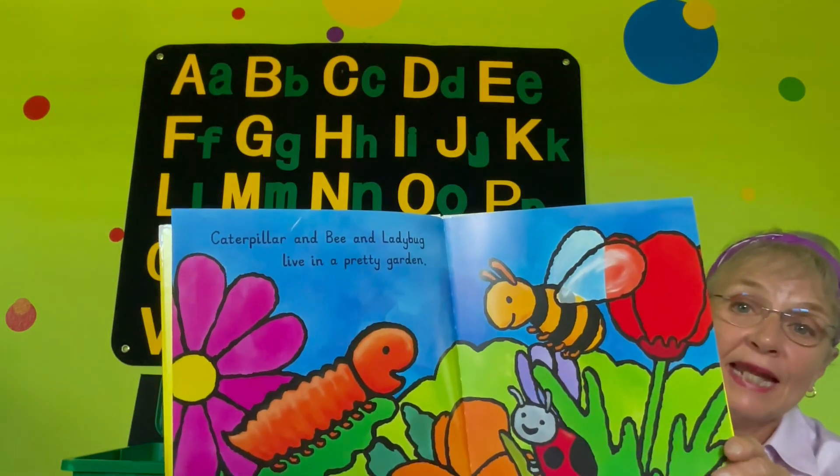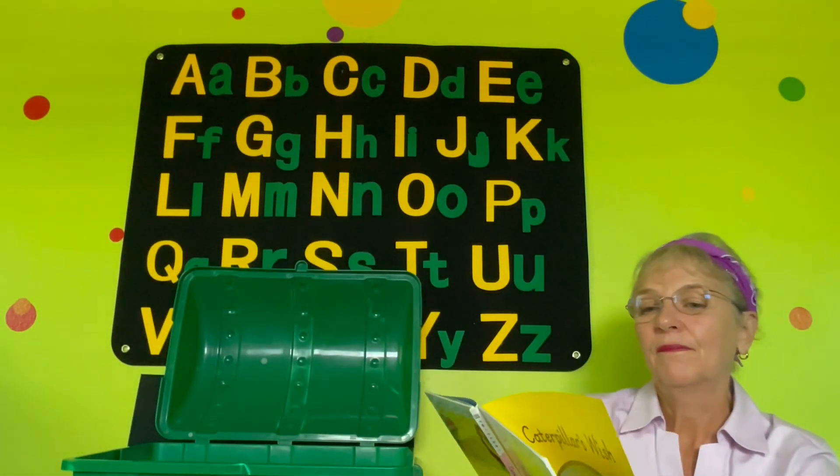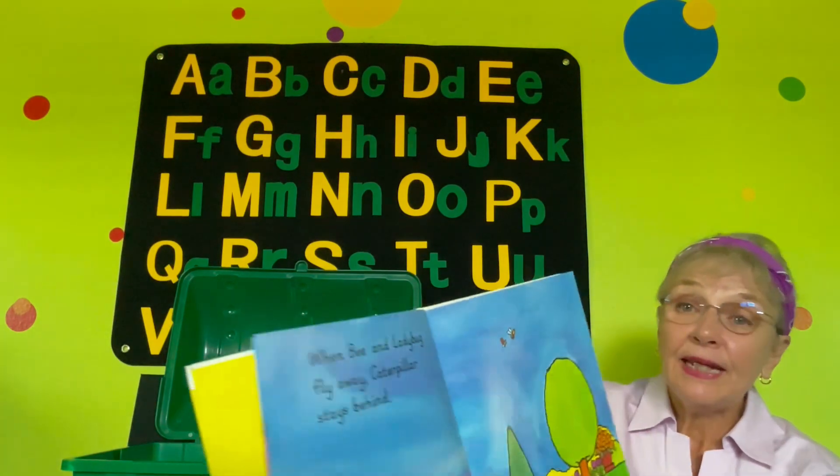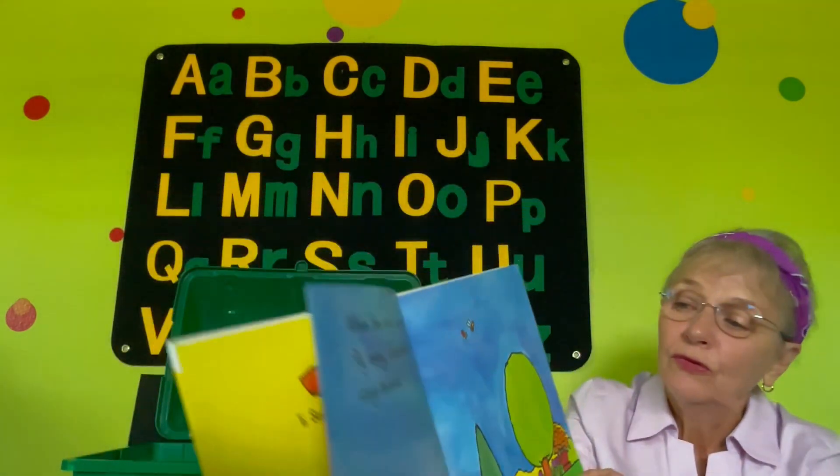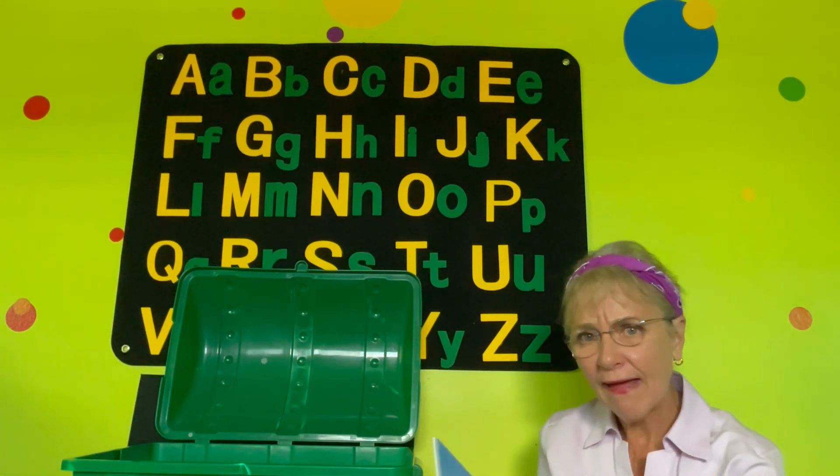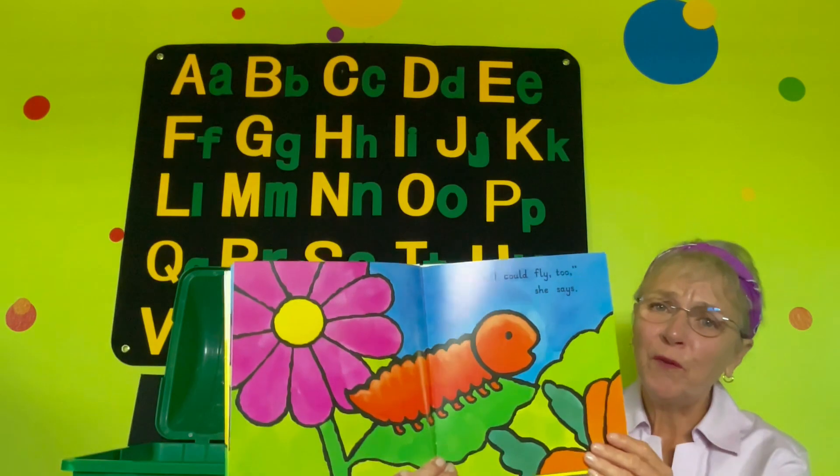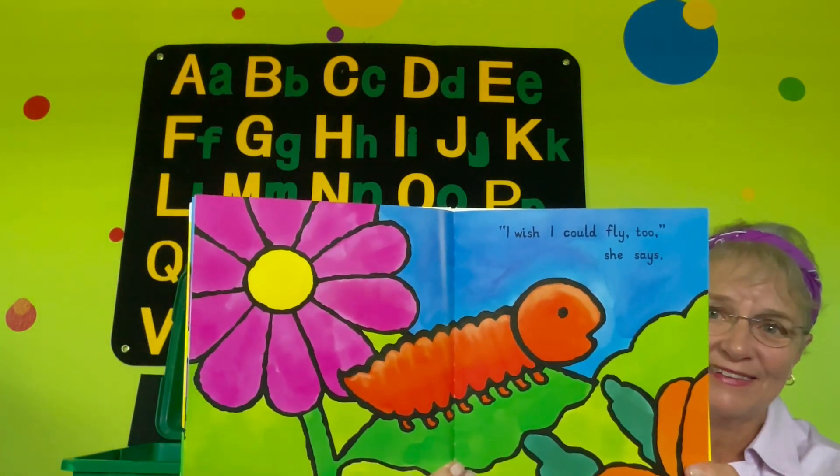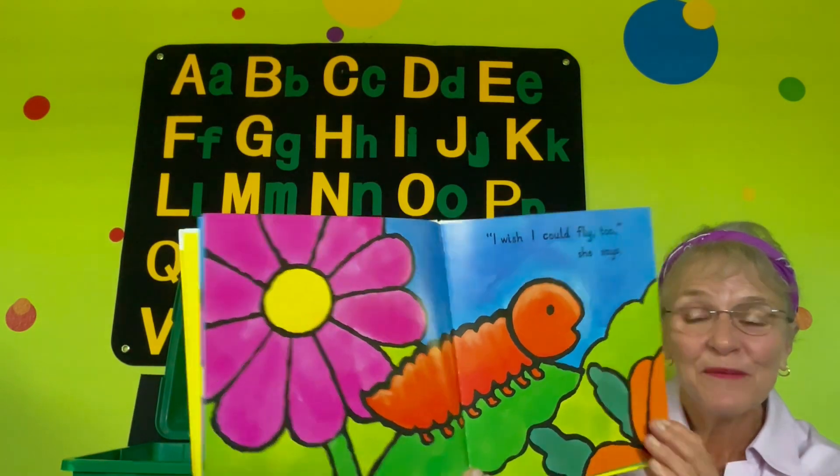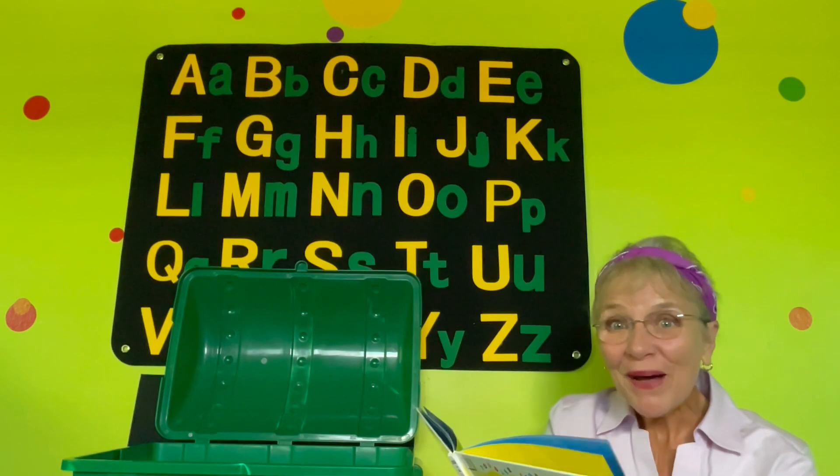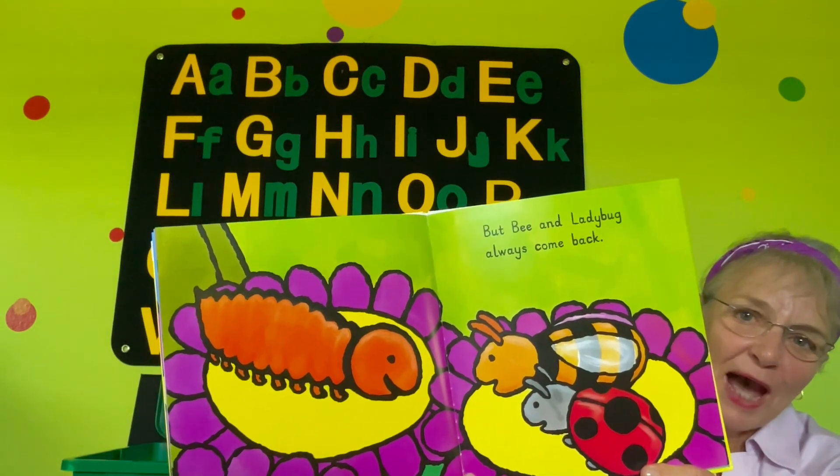Caterpillar and bee and ladybug live in a pretty garden. When bee and ladybug fly away, Caterpillar stays behind. Do you think that makes Caterpillar sad to see her friends fly away and she can't? I wish I wish I could fly too, she says. So that is Caterpillar's Wish. She wishes she could fly. But bee and ladybug always come back. Do they look happy? Yeah.